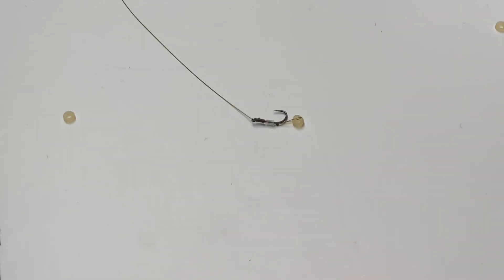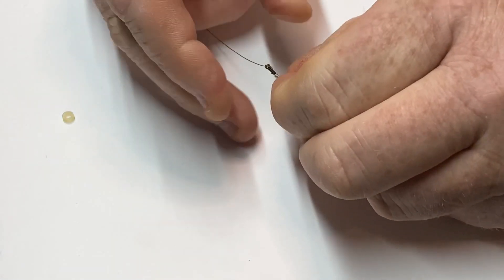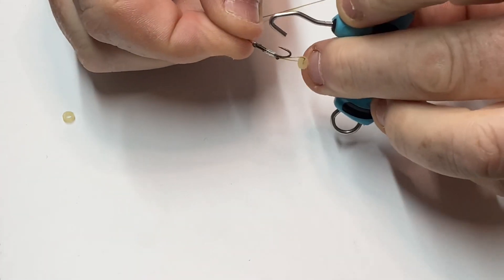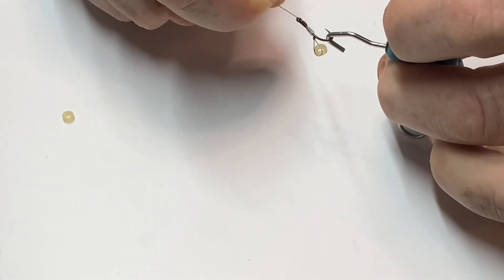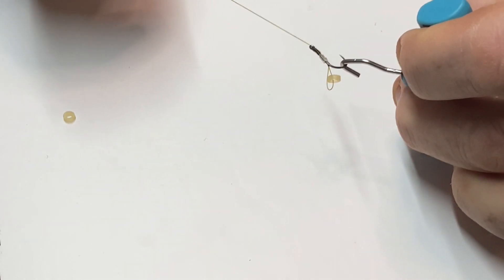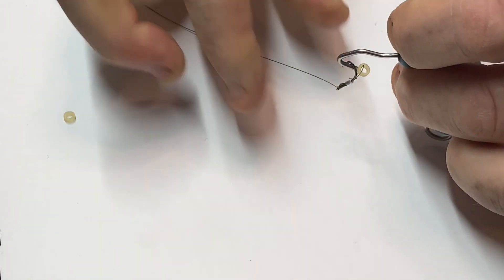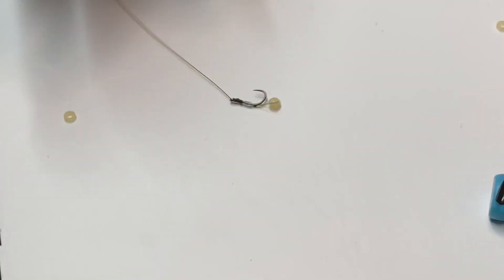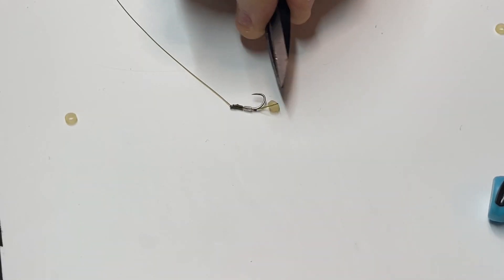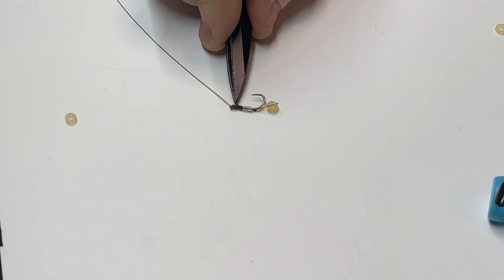There we go, guys. Just to finish off, I'm going to take my hook, get my rig puller, and pull that nice and tight. There you have a hair rig with the band, the loop, piece of silicone to keep it nice and straight, and a knotless knot on the end.